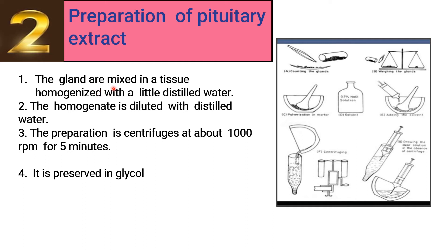In the second step, preparation of pituitary extract: the glands are ground into tissue and combined with distilled water to form a homogenate. The homogenate is collected and the preparation is centrifuged — as seen in the diagram — at a set RPM (revolutions per minute) for five minutes. The supernatant is then preserved.